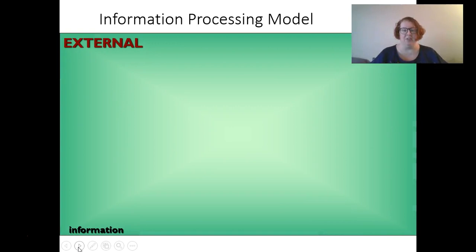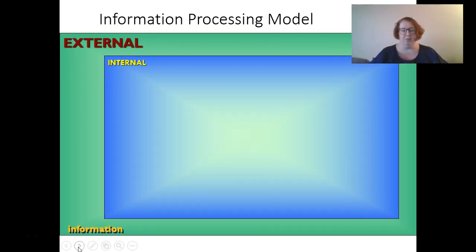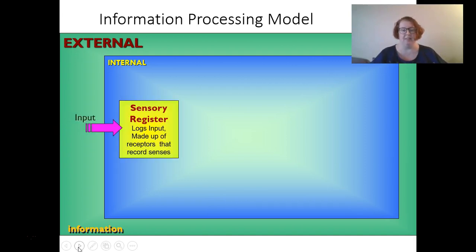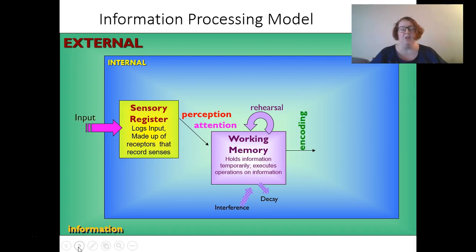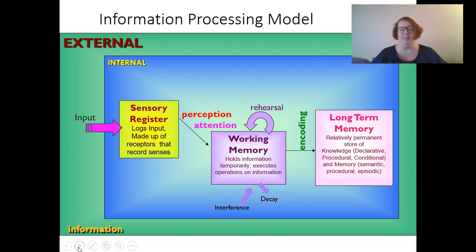Let's go through the whole model. In the world, we have all this external information. Then we have our internal processing. We get input all the time from lots of sources, and it goes into our sensory register — our eyes, ears, mouth, hands, all of our receptors. We perceive and attend to some of that at any given time, and that goes into our working memory. There's only a limited amount of space in working memory, so what I'm saying right now is in your working memory. To keep it there, we have to rehearse it, but over time there's interference and it decays. In order to keep memories, we have to encode into our long-term memory, which is a relatively permanent storage.